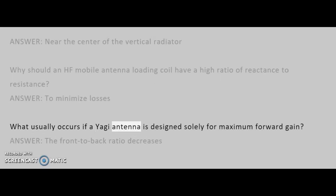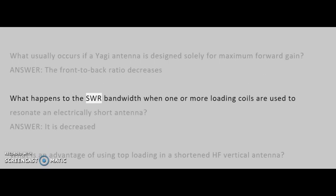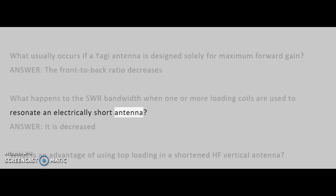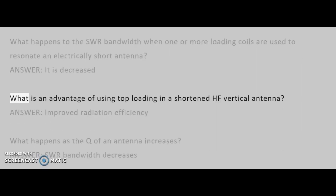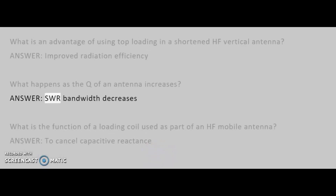What usually occurs if a Yagi antenna is designed solely for maximum forward gain? Answer: the front-to-back ratio decreases. What happens to the SWR bandwidth when one or more loading coils are used to resonate an electrically short antenna? Answer: it is decreased. What is an advantage of using top loading in a shortened HF vertical antenna? Answer: improved radiation efficiency. What happens as the Q of an antenna increases? Answer: SWR bandwidth decreases.